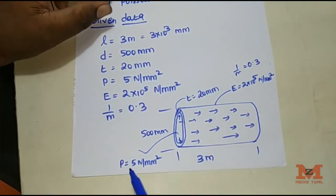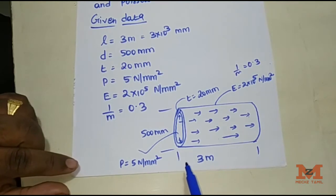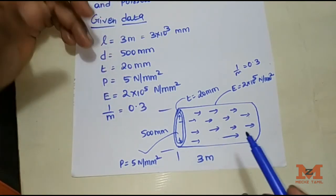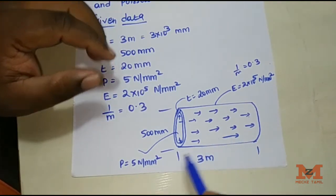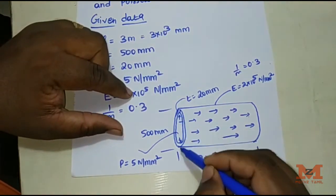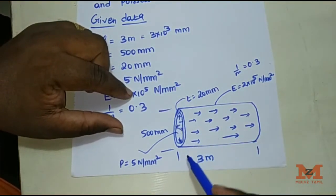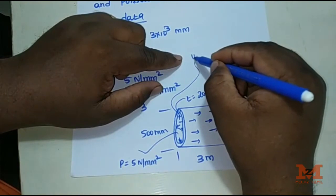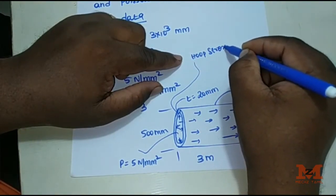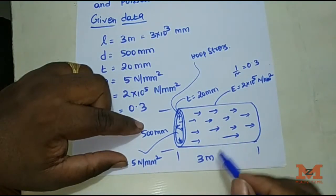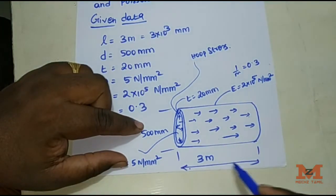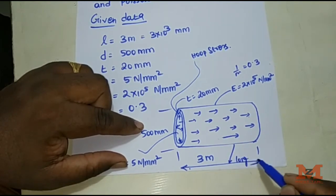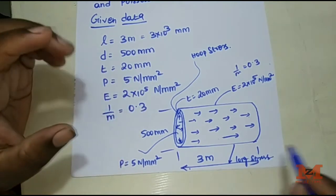Because internal pressure develops, stress is induced in the shell. Circumferential stress — also called hoop stress — is calculated in the circumferential direction. Longitudinal stress is developed in the longitudinal direction.